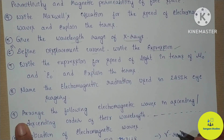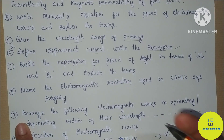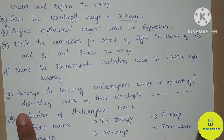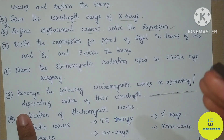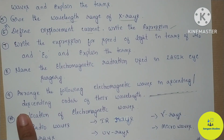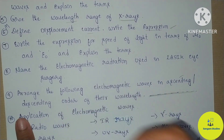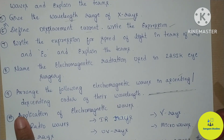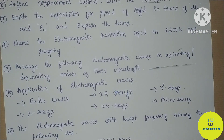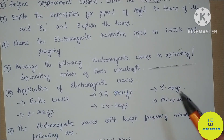Next question: name the electromagnetic radiation used in LASIK eye surgery. The wavelength range of electromagnetic waves is very important in this chapter — all electromagnetic waves are important. The next question is about the application of electromagnetic waves. The types include: radio waves, IR rays, gamma rays, microwaves, UV rays, and X-rays.